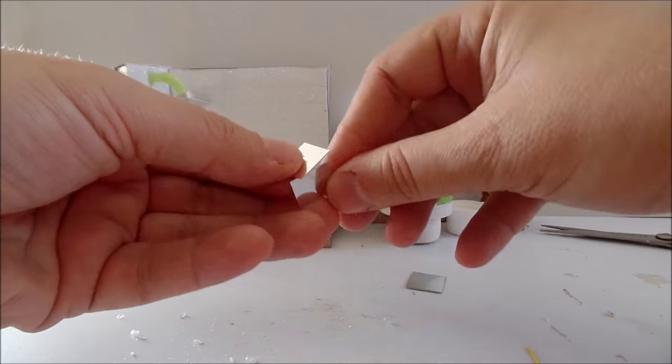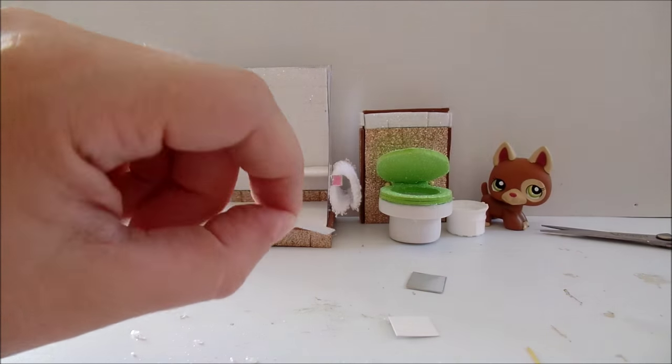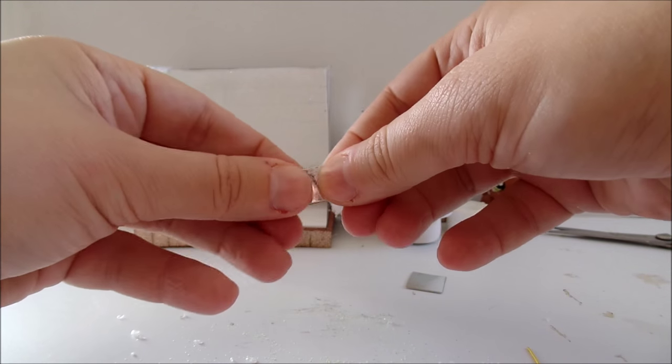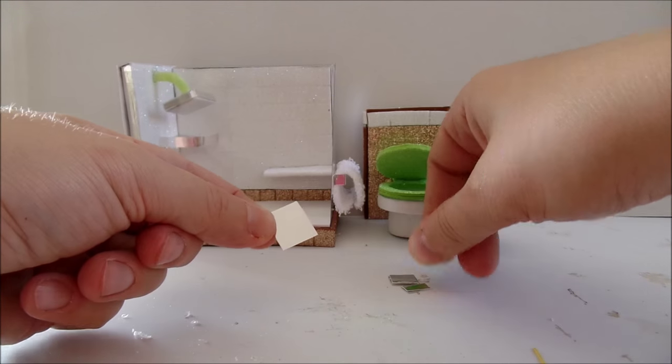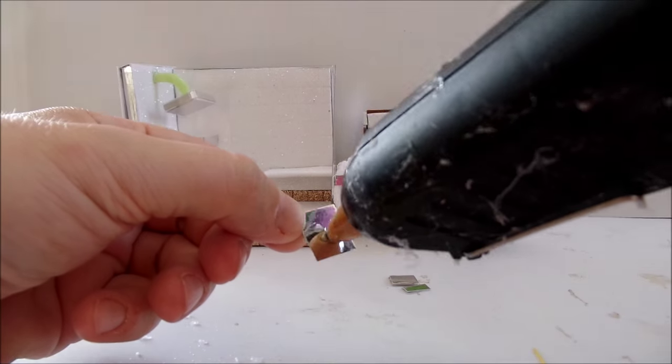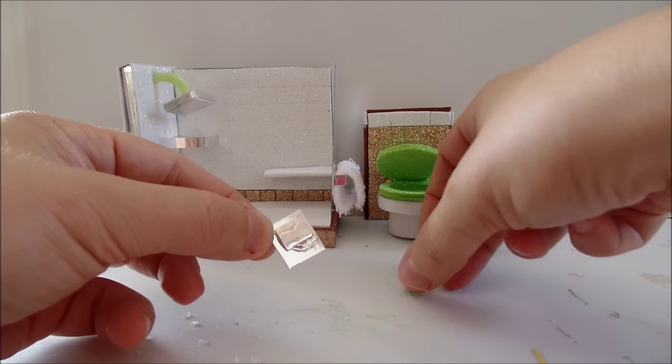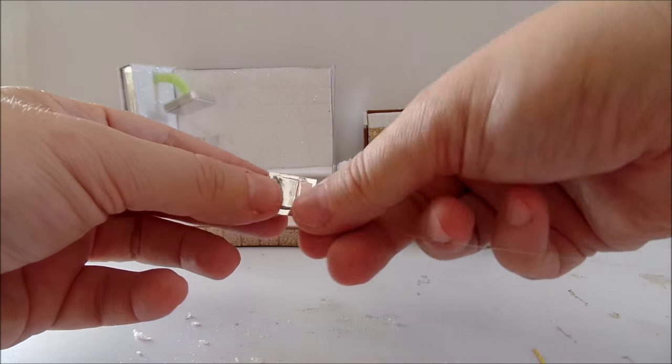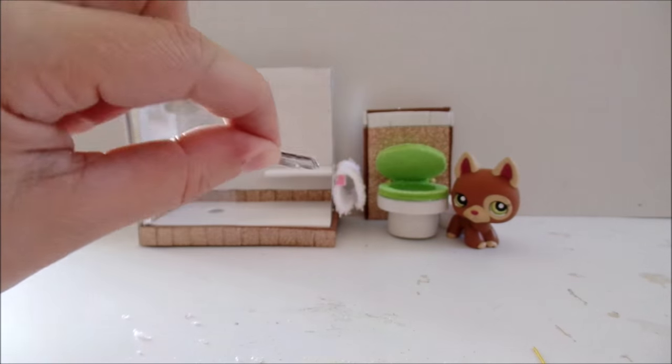Take two small silver cardboard squares, glue them together. Cut them into equal strips, glue them on another square, flush the water. And then glue it to the back of the toilet.